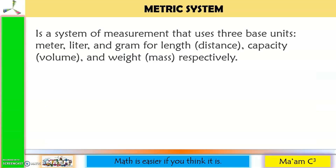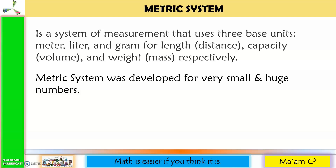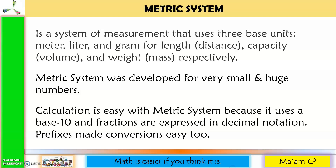The metric system is a system of measurement that uses 3 base units — meter, liter, and gram — for length, capacity, and weight respectively. It was developed for very small and huge numbers. Calculation is easy with the metric system because it uses a base 10 and fractions are expressed in decimal notation.